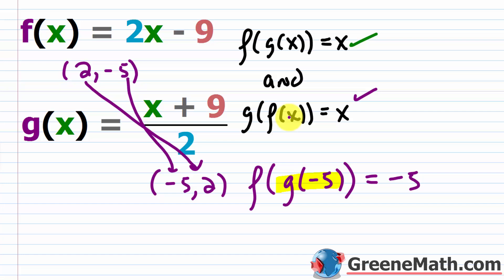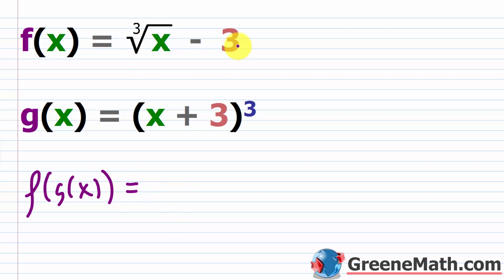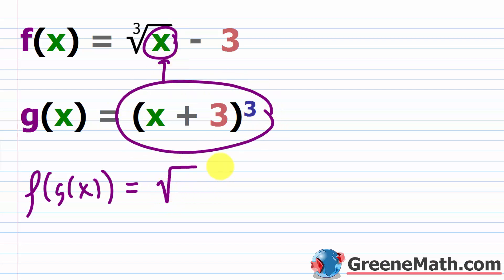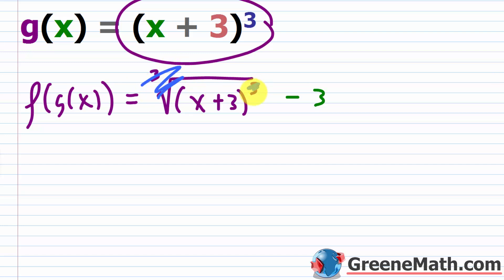Let's look at another one. We have f of x equals the cube root of x minus 3, and g of x equals the quantity x plus 3 cubed. Are they inverses? Let's check f of g of x first. I'm going to plug g of x in for x in f. So you would have the cube root of the quantity x plus 3 cubed, and then subtracting away 3. The cube root index cancels with the exponent, leaving x plus 3. So you'd have x plus 3 minus 3, which is just equal to x. The first condition is true: f of g of x is x.